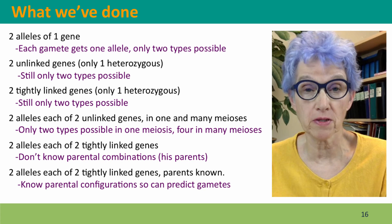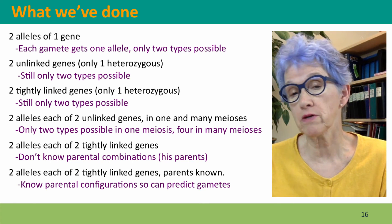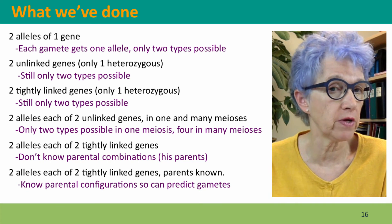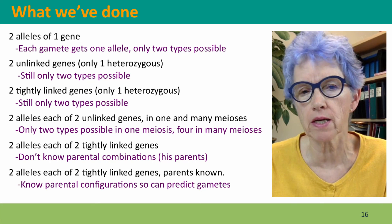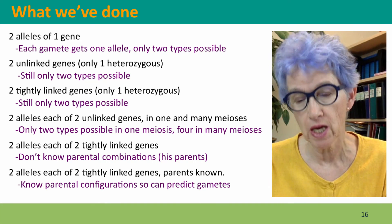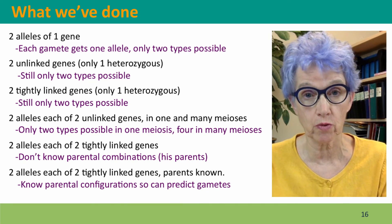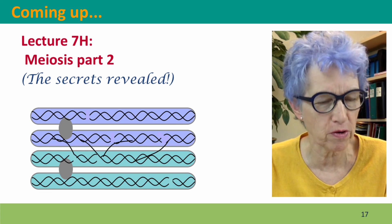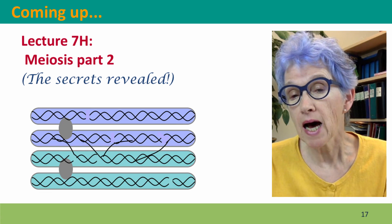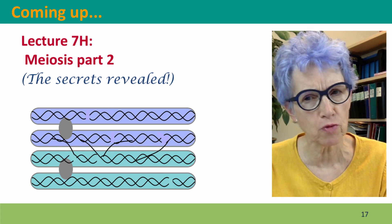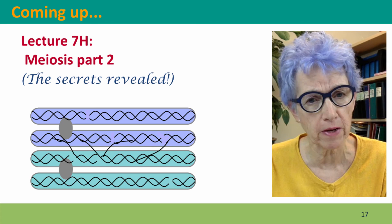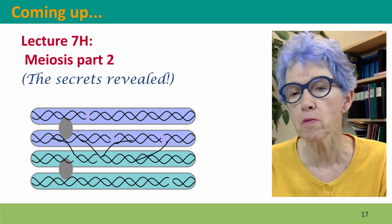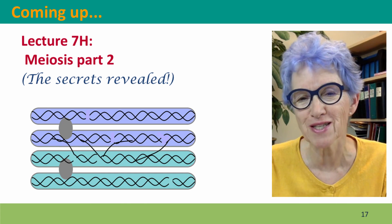So we've done a bunch of genetics problems, considering a number of different situations. My goal is that you've come out of it with a much clearer understanding of how the physical events of meiosis give rise to the genetic consequences for the gametes. Coming up next is probably my favorite part of Module 7: a discussion of how homologous chromosomes find each other in pairing, and how they manage to pair so perfectly that when they cross over, not a single base is lost or added. I hope to see you there.